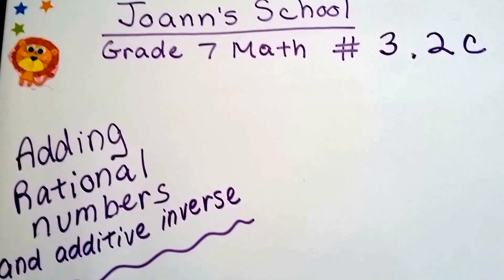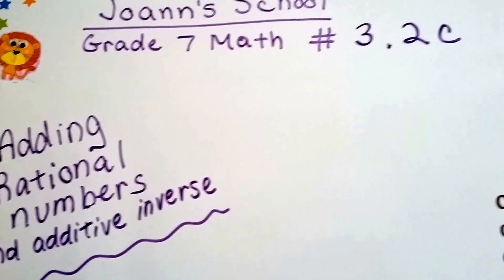Grade 7 math number 3.2c, Adding Rational Numbers and Additive Inverse.